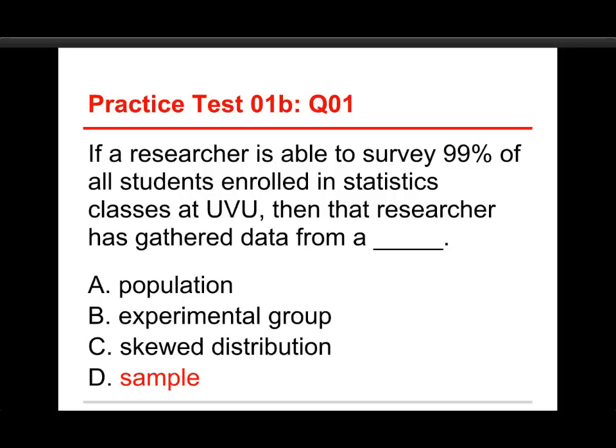The answer is D, a sample. The idea is that if you've gathered data, it's a sample. The sample is the group of people you actually have information from. Even if it's 99%, you're still trying to infer something about the remaining 1% in the population. Data come from samples almost always, mostly because it's impractical — sometimes impossible — to get data from entire populations.